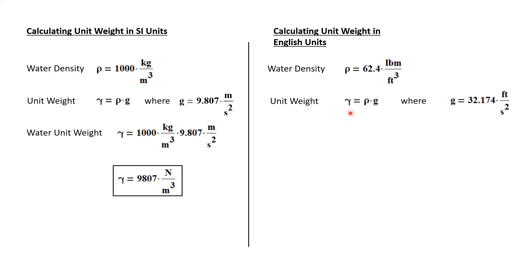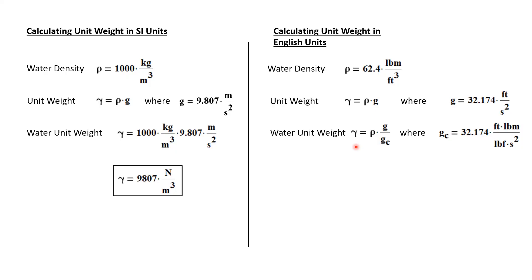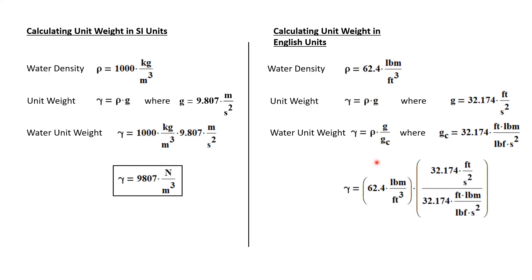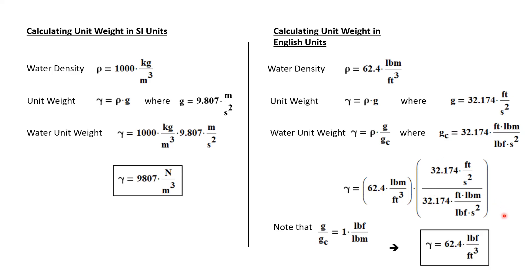Now the same calculation in English units, where we take water density as 62.4 lbm/ft³. Unit weight has the same definition — rho times g — but since we're multiplying by g, we need the proportionality constant g_c included. So in English units we calculate unit weight as rho·g/g_c. Looking at the ratio g/g_c, it reduces to one pound-force per pound-mass. The pound-mass cancels with the pound-mass in the density, and we get a unit weight of water equal to 62.4 lbf/ft³, which is exactly what we expected.